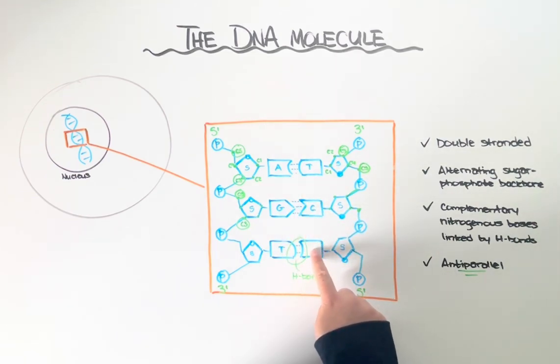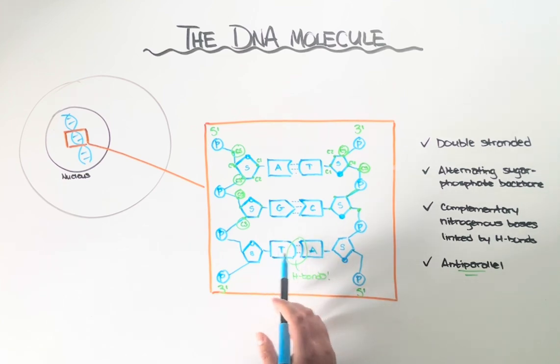They always arrange themselves into these complementary base pairs. A always bonds with T, and C always bonds with G. So let's say I didn't know what this nitrogenous base was. As long as I know that this is the thymine, I should actually be able to fill this in and say that must be an adenine or an A because those two bases always bond together.